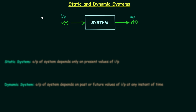In the previous lecture we saw the introduction of basic system properties, where I mentioned 12 different types of systems. Out of those 12 systems, we are going to discuss two systems in this lecture: static and dynamic systems. We are discussing them together because they are closely related. We will once more understand past input, present input, and future input, as these terms are very important to define static and dynamic systems.